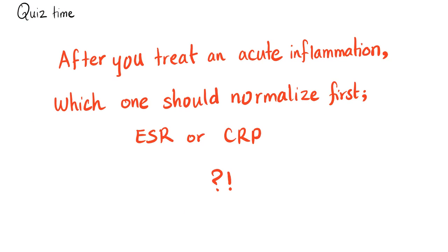Quiz time! Let's say you had an acute inflammation with very high ESR and CRP. Because I'm an awesome doctor, I treated you and you returned to normal. Which one should normalize first — the ESR or the CRP? Let me know down below in the comments.